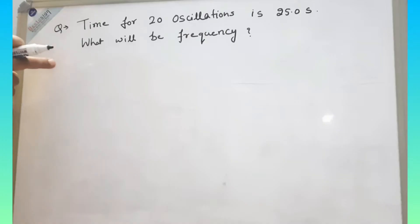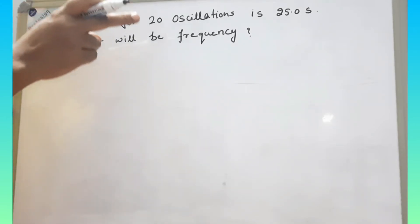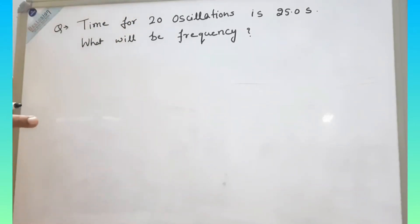This is a question which relates frequency and time period. Question is, time for 20 oscillations is 25 seconds. What will be frequency? So as you know, frequency is number of vibration in 1 second or number of oscillations in 1 second. So we will see that in 1 second, there will be how much oscillation? So we will use unitary method.